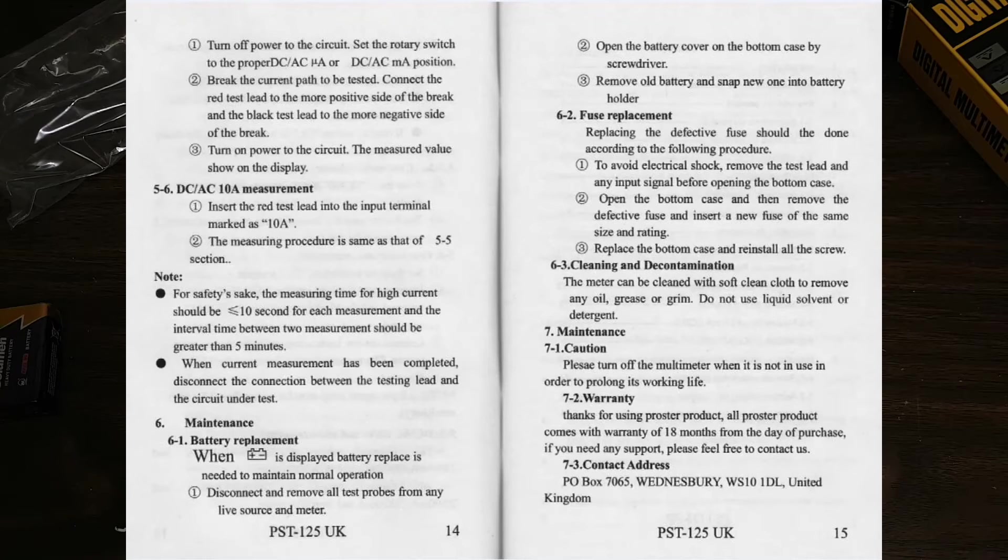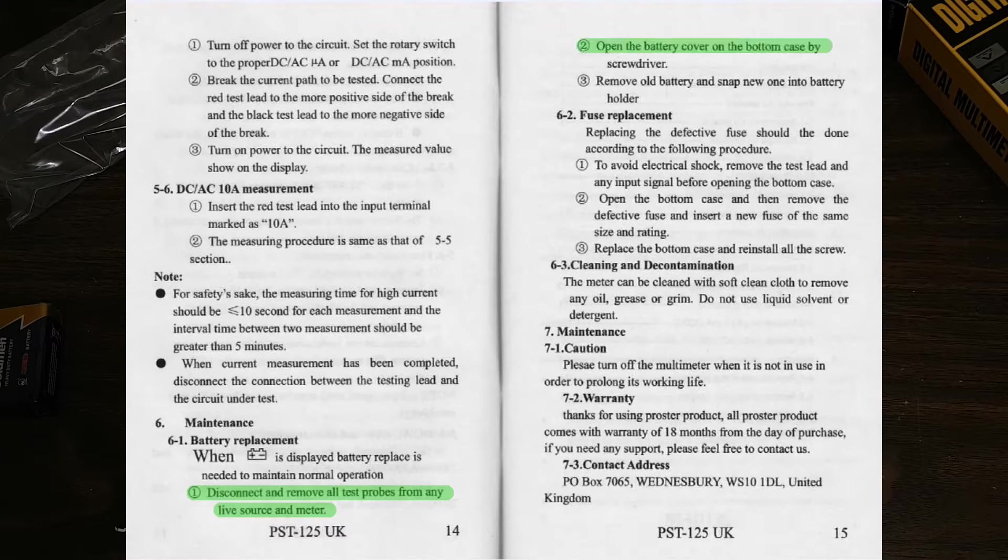It doesn't mention installing the battery for the first time, but I think it's fairly safe to assume that it is fully transferable. To disconnect and remove all test probes from any live source and meter, open the battery cover on the bottom case by screwdriver. So it's pretty easy and it's just the one screw that holds on the back cover there.